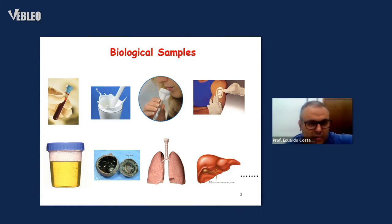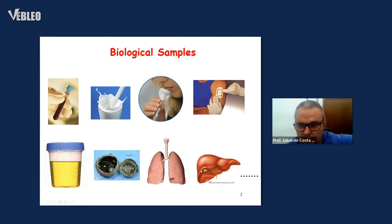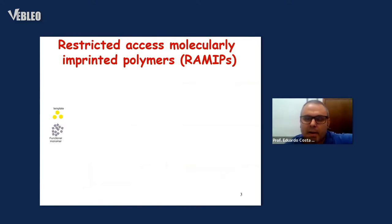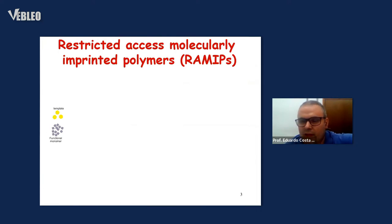Many strategies have been carried out in order to eliminate the proteins from biological samples before the analysis, in order to facilitate the analytical procedure. The first strategy is probably protein precipitation by using some solvent. But these procedures have some problems, such as dilution of the sample, loss of some analyte together with the precipitate, and modification of the pH, among others.